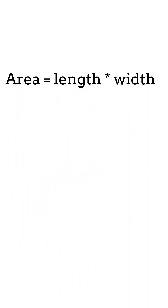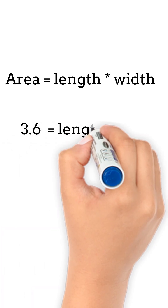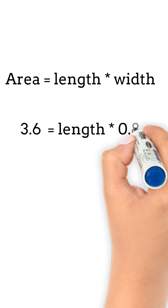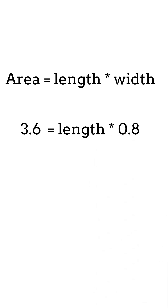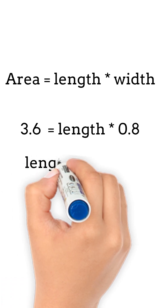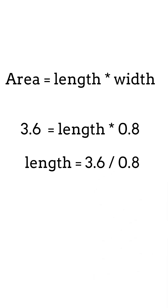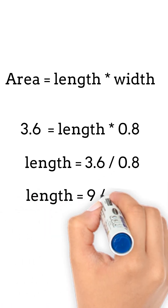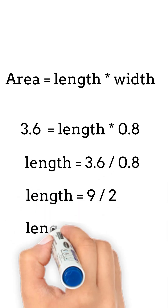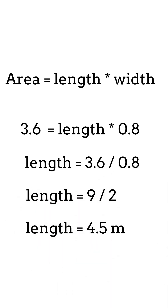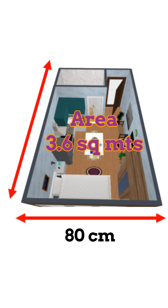Substituting the given values, we get 3.6 equals length times 0.8. Keeping the unknowns on one side, length equals 3.6 divided by 0.8, which equals 9 upon 2, which equals 4.5 meters. Hence, the length of the hallway is 4.5 meters.